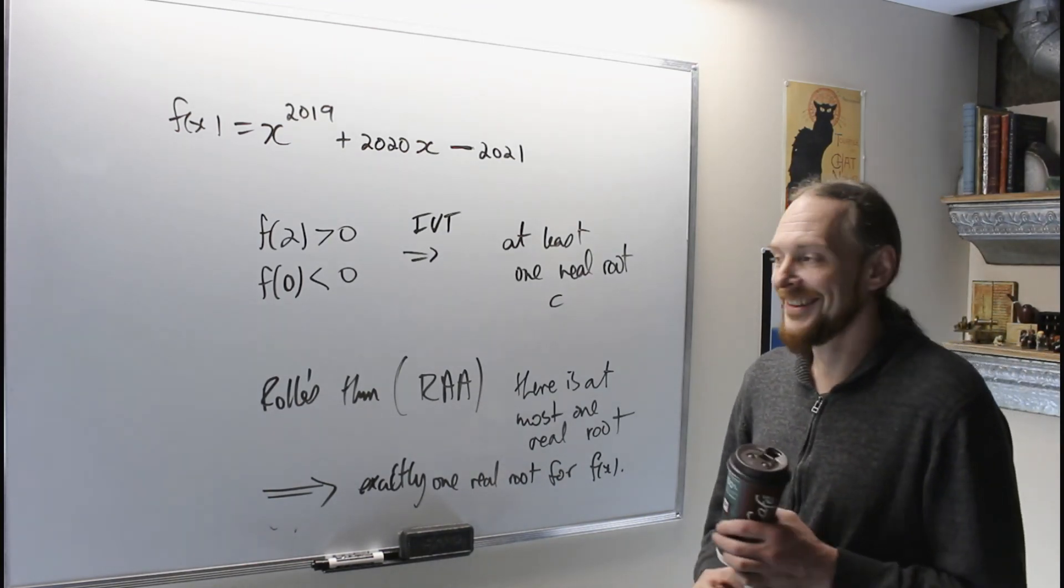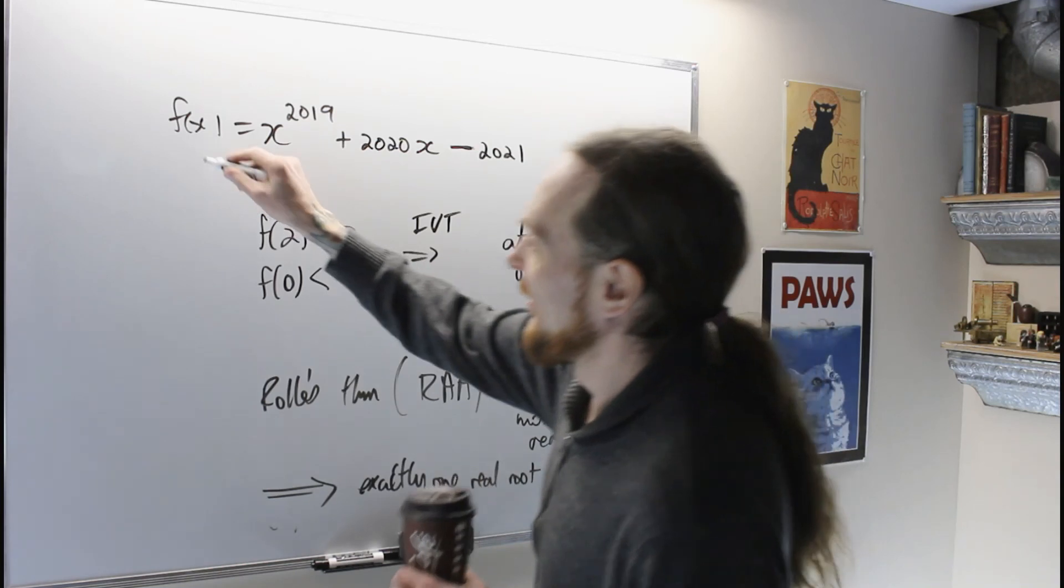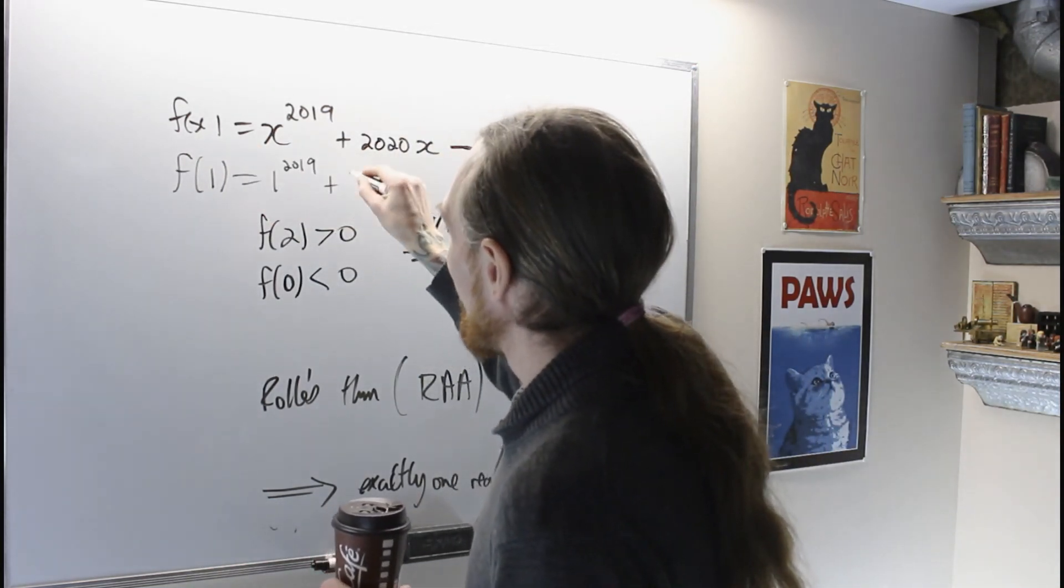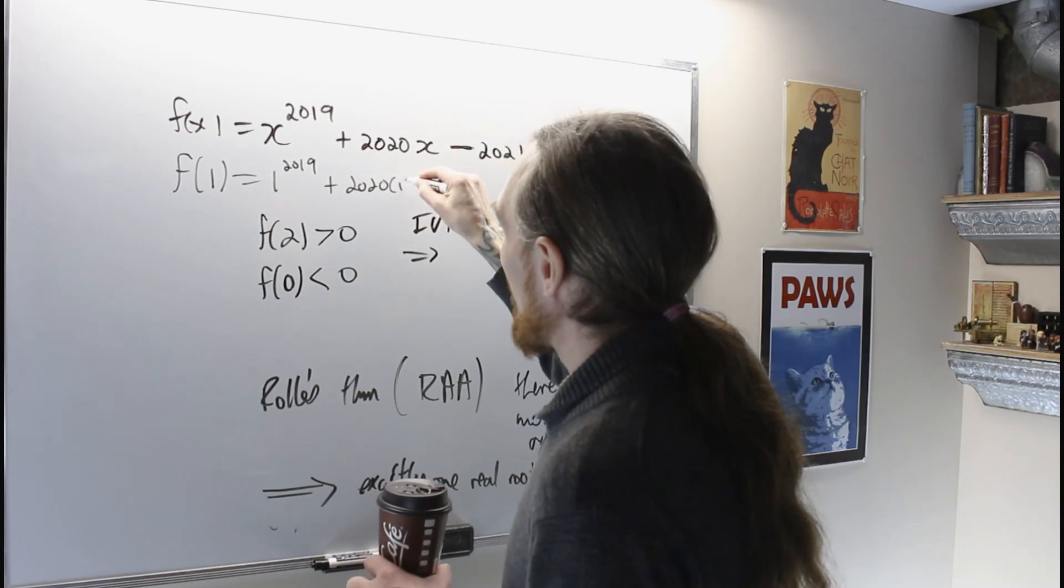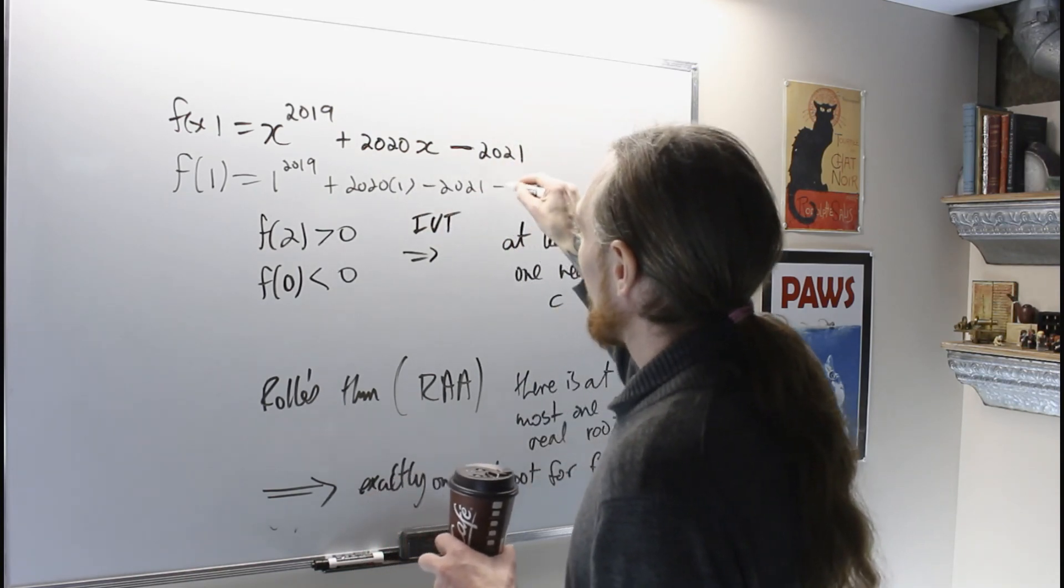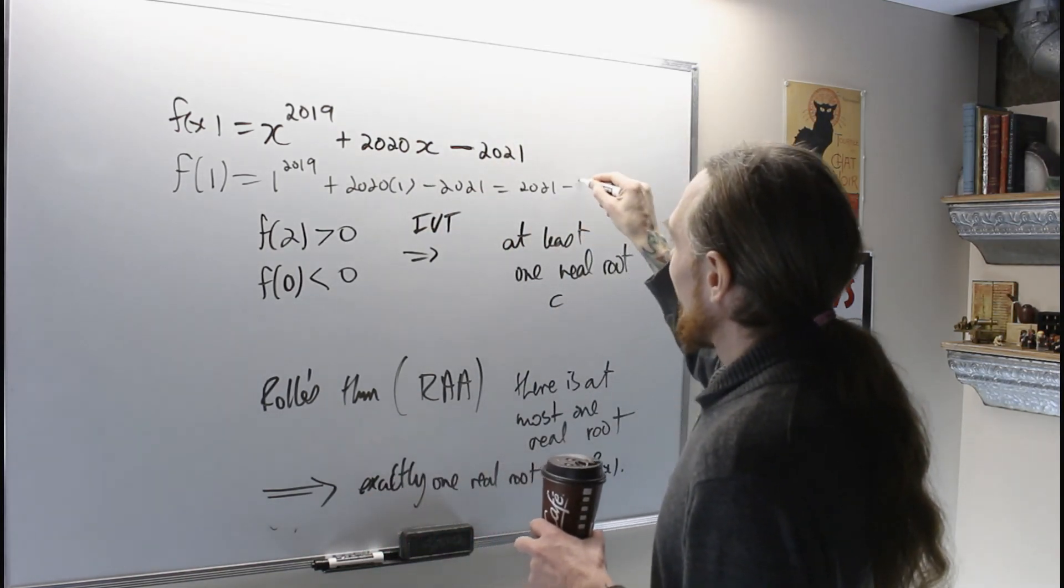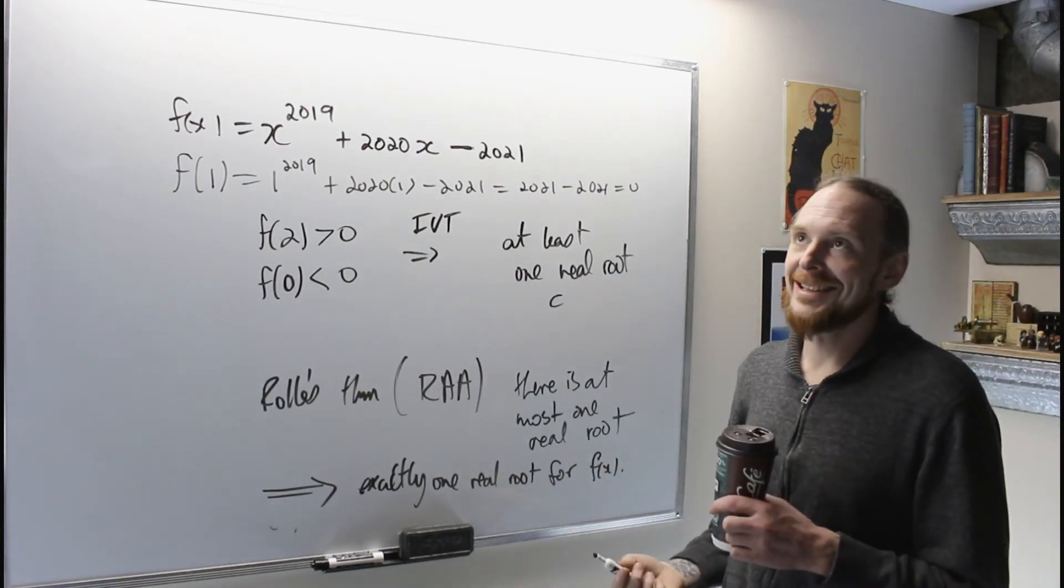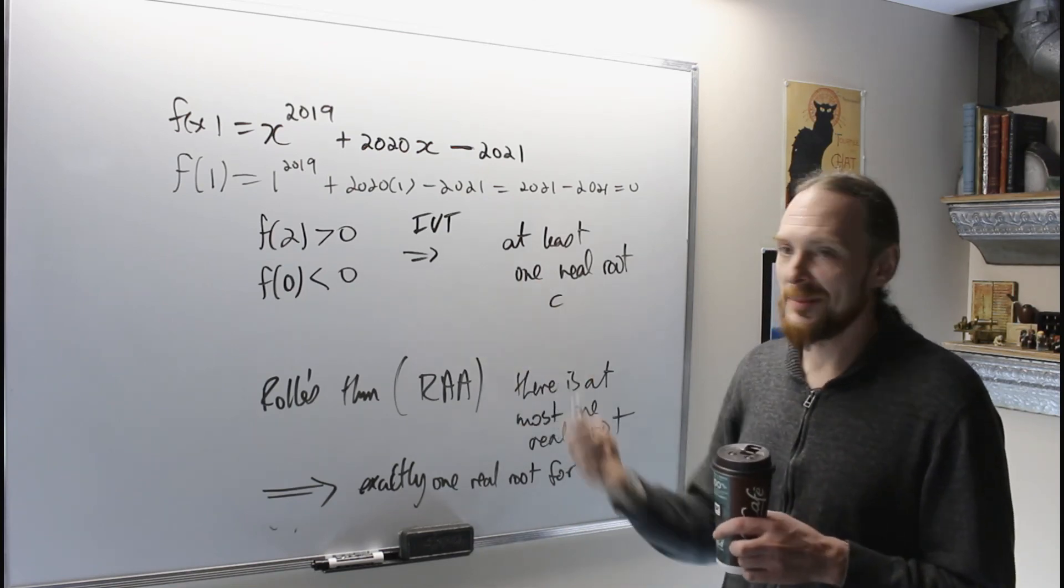So, coincidentally, f of 1 is 1 to the 2019 plus 2020 times 1 minus 2021, which is 2021 minus 2021, which is zero. The root is 1. That was an accident, it turns out, but it serves my purpose.